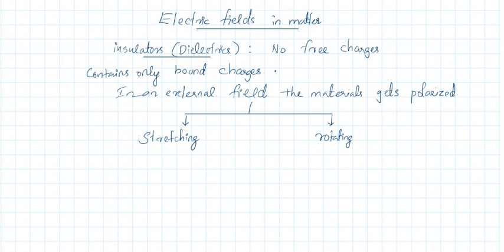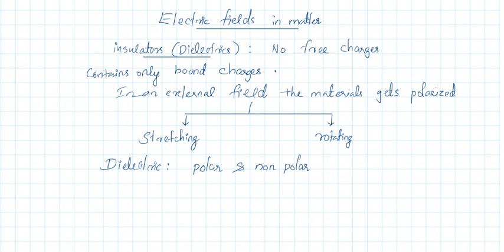Due to these two processes, a dielectric material can get polarized in an external electric field. Now we will consider this in detail. Dielectrics can be classified into two types: polar and non-polar dielectrics.